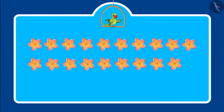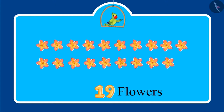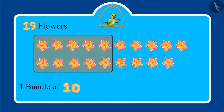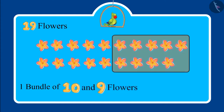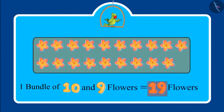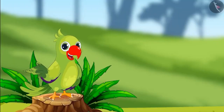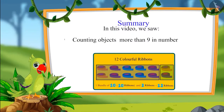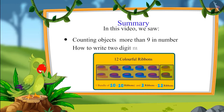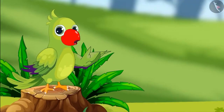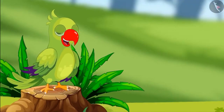These are some flowers. The number of these flowers is written below them. Can you identify and tell me this number? Yes — this is one bundle of ten flowers and nine more flowers, that means in total nineteen flowers. Very good, children. That was all for today. In this video, we saw more examples and common mistakes while counting objects more than nine, and how to write two-digit numbers. I hope you have understood this topic very well. Bye, friends.